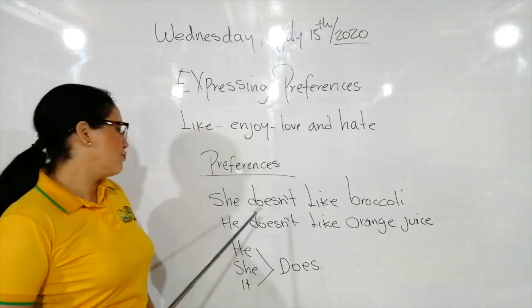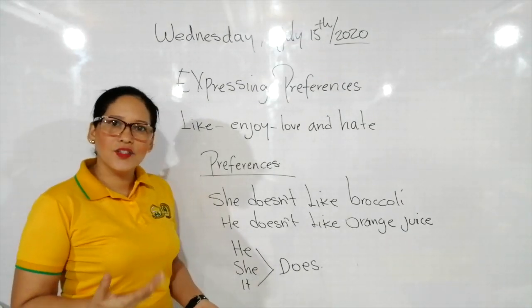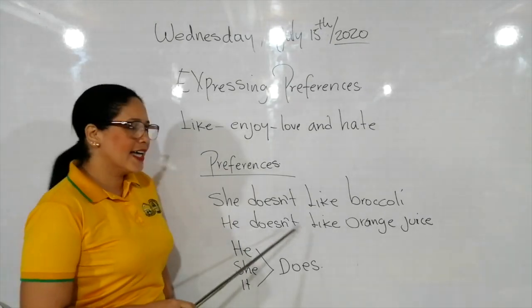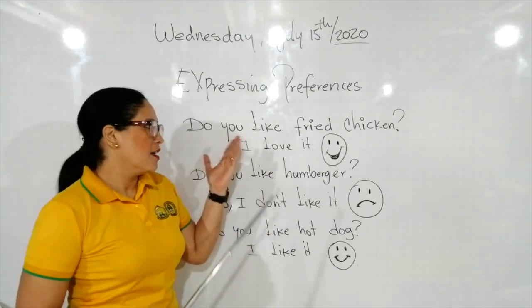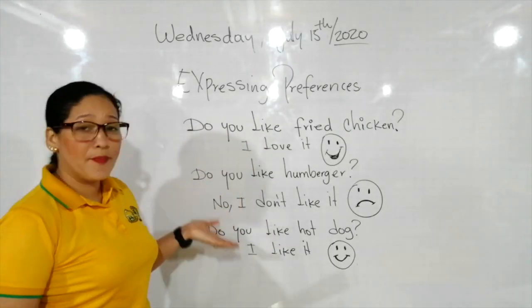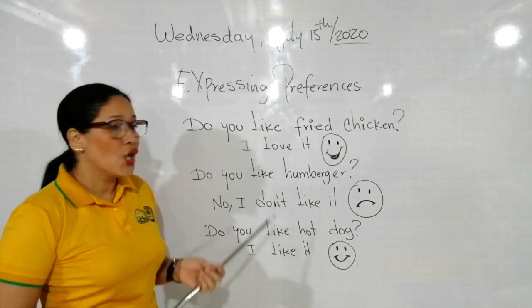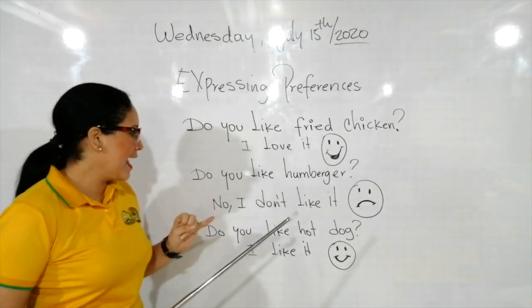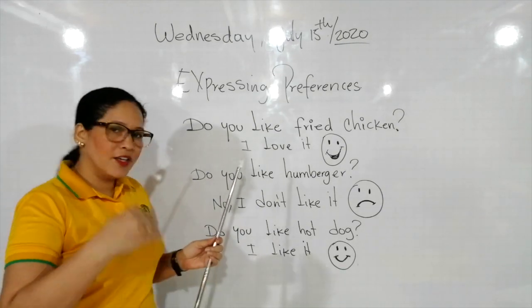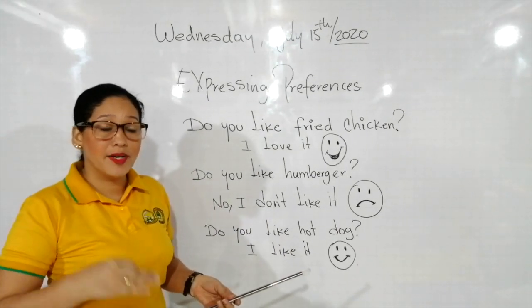Una vez más vamos a hacer la pronunciación: she doesn't like broccoli — a ella no le gusta el brócoli. He doesn't like orange juice — a él no le gusta el jugo de naranja. More examples. Vamos a usar los verbos like, love y también hate y enjoy.